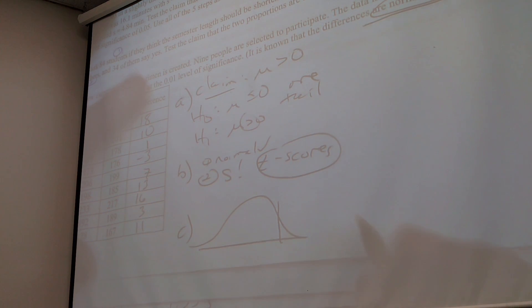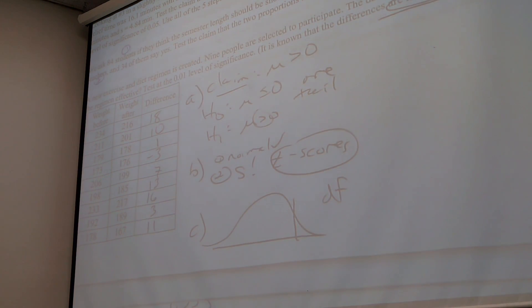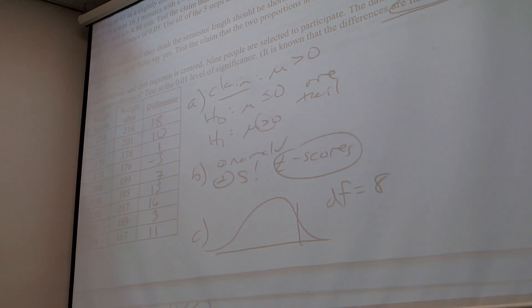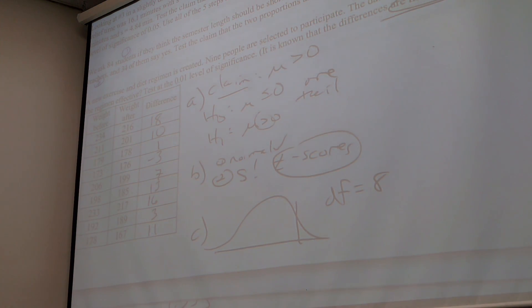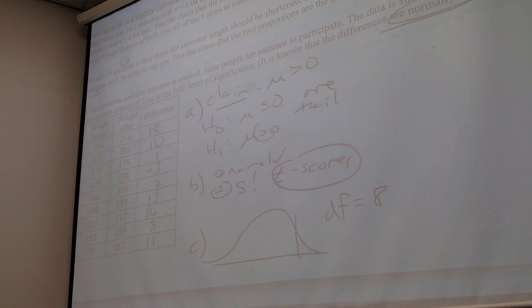So people sometimes tell me I have 18 data points. But this is one person, so that's nine data points. I like it. So degrees of freedom at eight. Alpha is 0.01. One tail test. What's my T score going to be? Two point eight, nine, six.